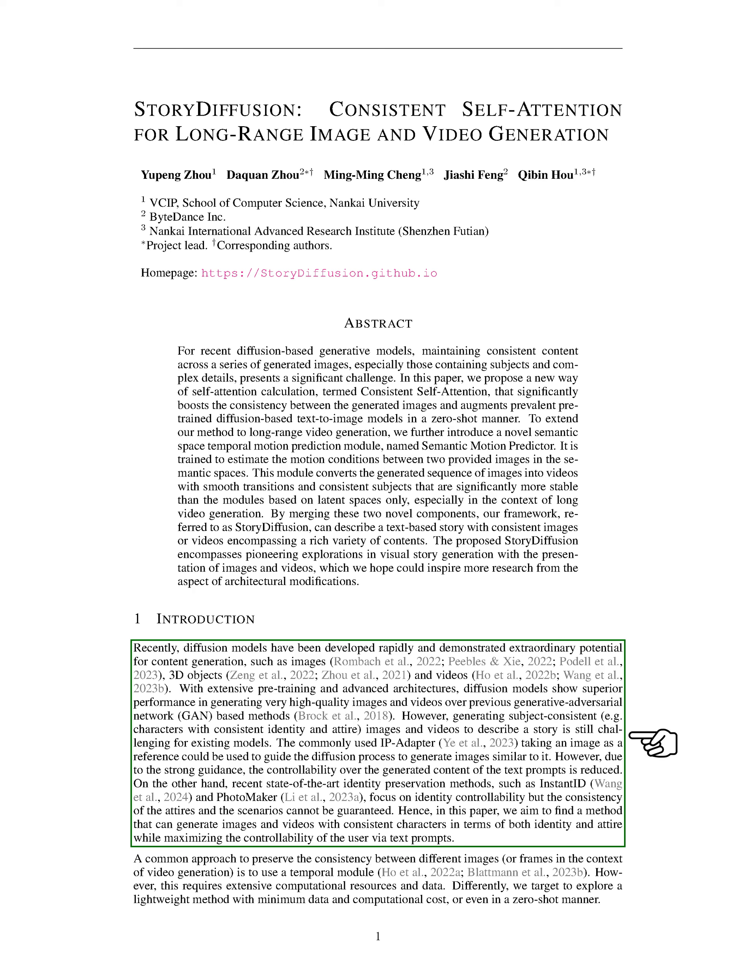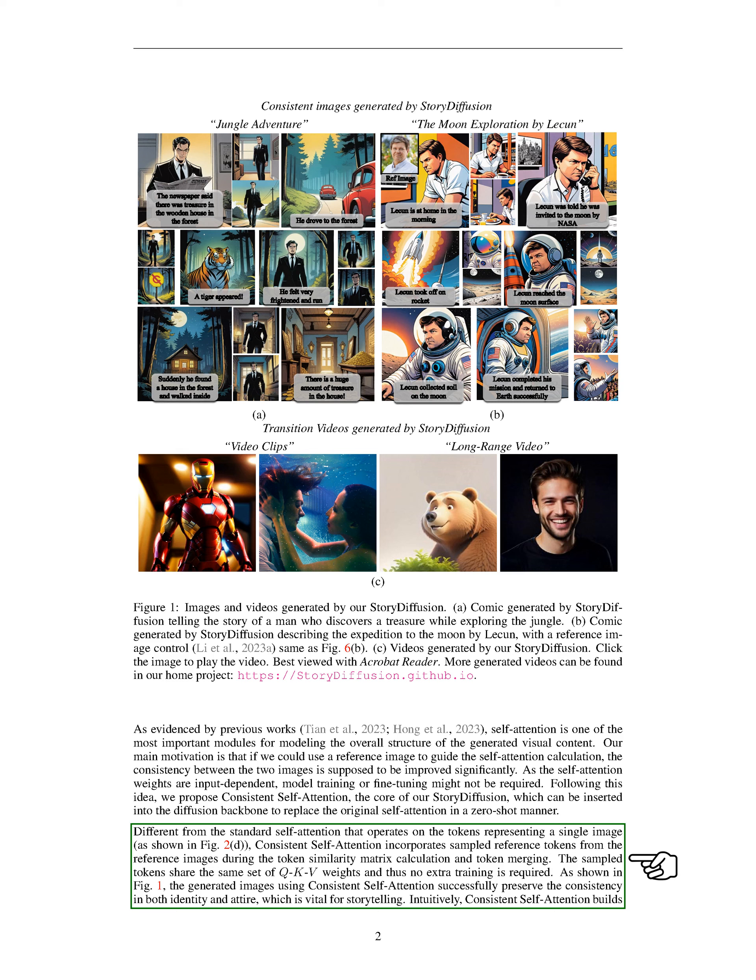Our goal in this study is to develop a method that can generate images and videos with consistent characters in both identity and attire, while allowing users to control the content through text prompts effectively. To address this, we introduce consistent self-attention as a key component of our Story Diffusion framework.